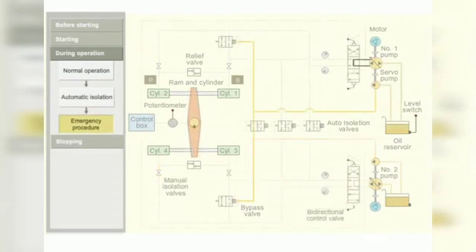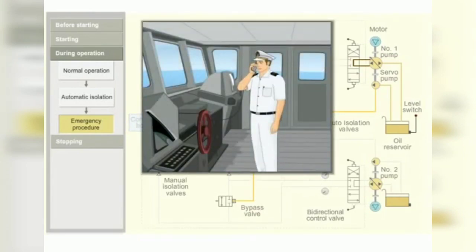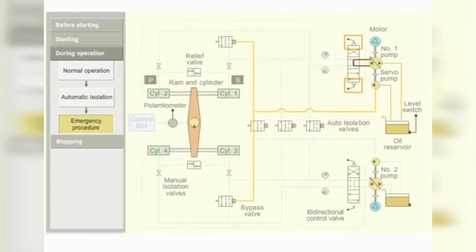Consider during the operation, the power supply fails in the control unit. In such an emergency, an alternative communication system is used to give the helm order to the steering compartment. The bidirectional control valve is actuated manually by using the levers.